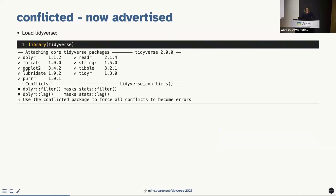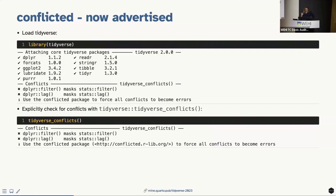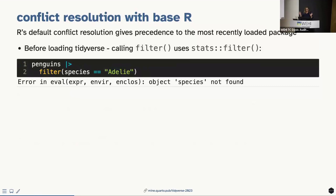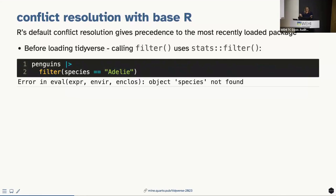The other tidyverse 2.0 change is that the loading message got longer — it now suggests using the conflicted package to force all conflicts to become errors. When you load the tidyverse, it tells you about conflicts with base R: for example, filter() and lag() from dplyr overwrite those in the stats package. Without conflicted, R silently uses the most recently loaded package, which can cause confusing errors.